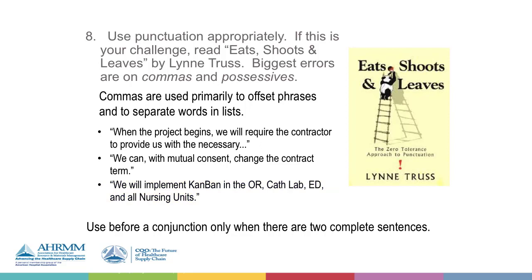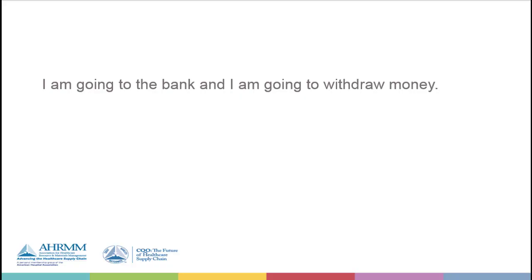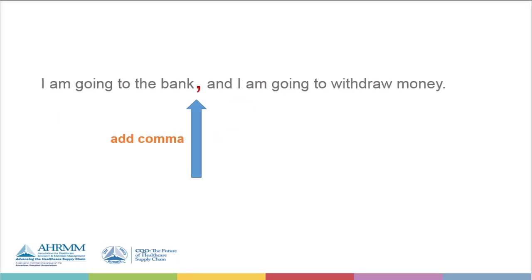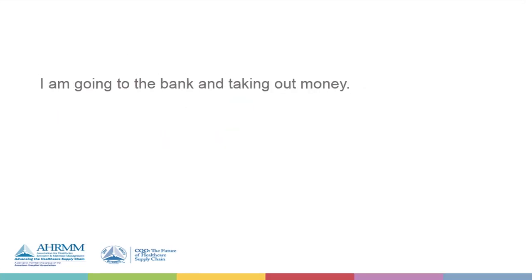Another place where people use commas too often is between two complete sentences that don't have a period. 'I am going to the bank and I'm going to withdraw money' — you have a subject and a verb in each clause, so you would use a comma. But if you said 'I'm going to the bank and taking out money,' that's not a full second sentence — 'taking out money' has no subject — so you would not use a comma there.